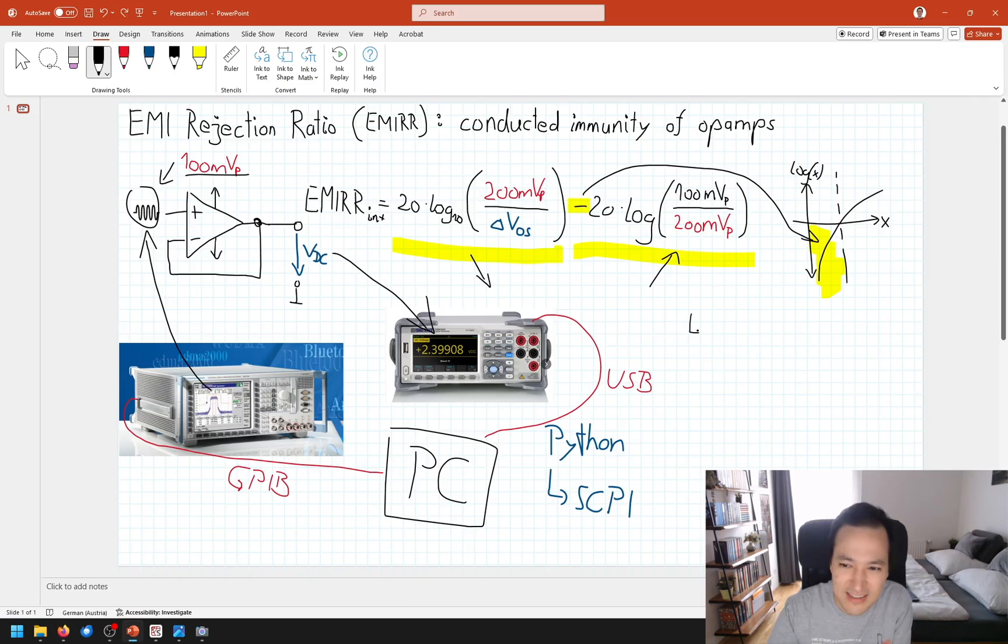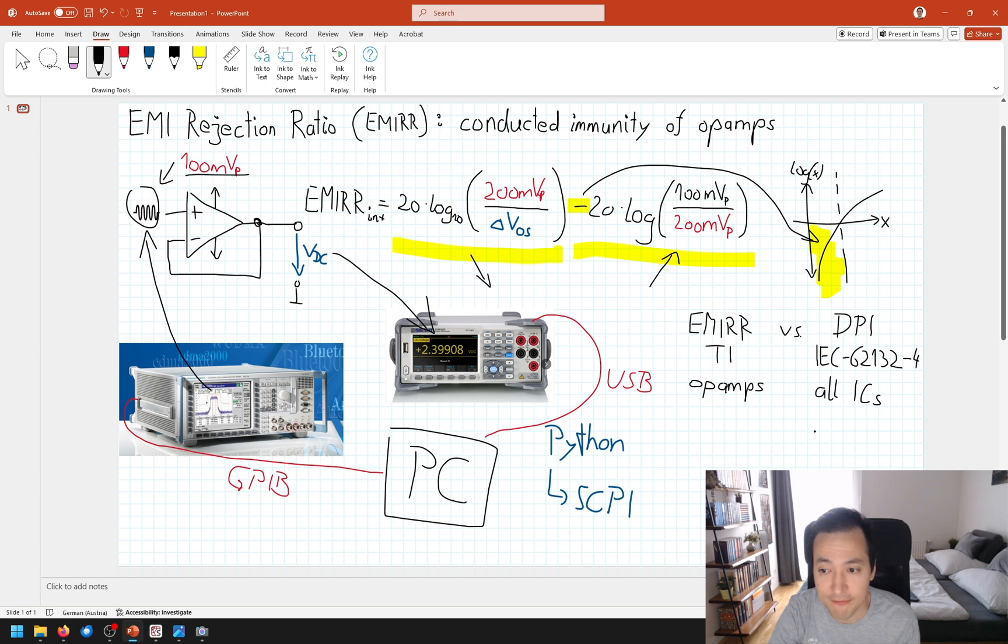To conclude this video, let's compare EMI rejection ratio with the more well-known DPI test method. First, the direct power injection is standardized in IEC 62132-4, whereas the EMI rejection ratio is based on the Texas Instruments application note. Second, you can use DPI on all ICs, whereas EMI rejection ratio focuses mainly on op-amps. Third, DPI depends on a failure criteria. We are increasing the power until our device under test fails. Whereas in EMI rejection ratio, we are just capturing this value. Last but not least, you might have already noticed it, in EMI rejection ratio, we are focusing to be in a 50 ohm test environment, which increases comparability and repeatability.